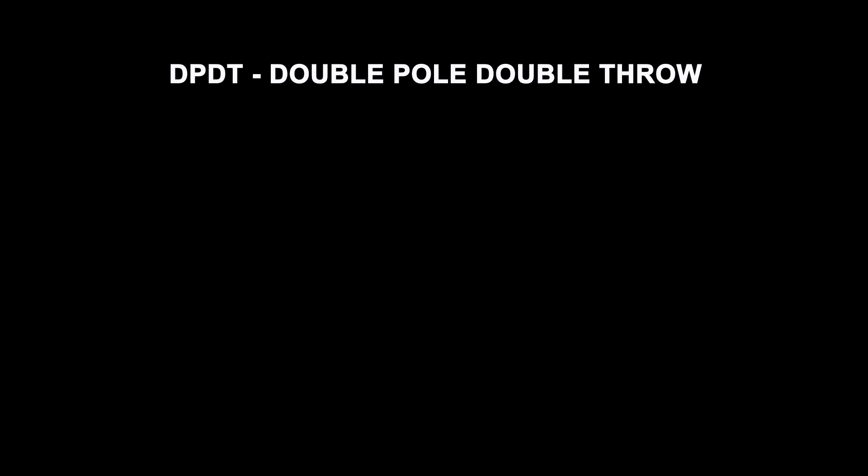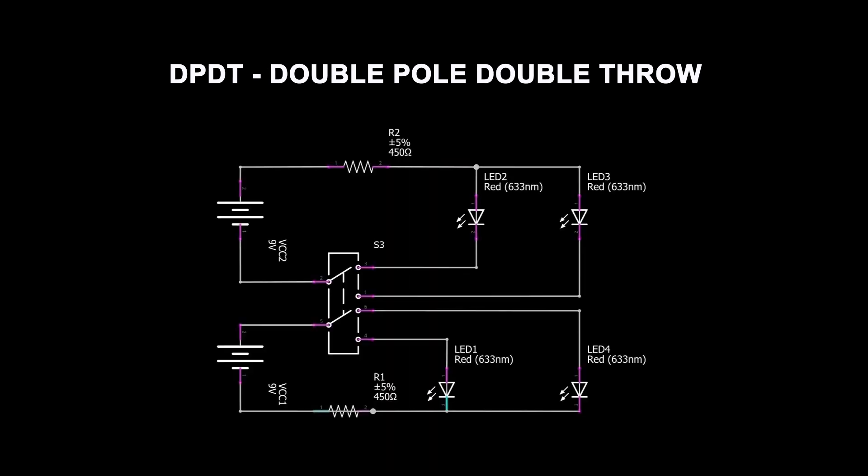The next switch is the double pole double throw, or DPDT — this is the one that most people get wrong. It has six terminals: two input contacts and four output contacts. In the same way as the DPST, there are two individual switches operated by one action, so you can operate two separate circuits, but you have double throws on the end of each pole.